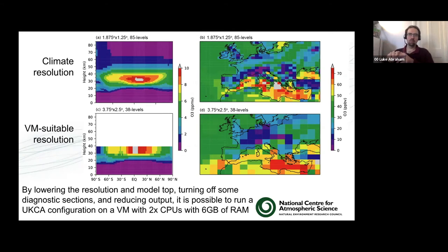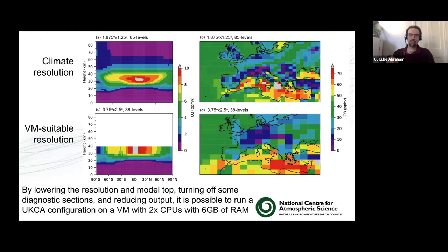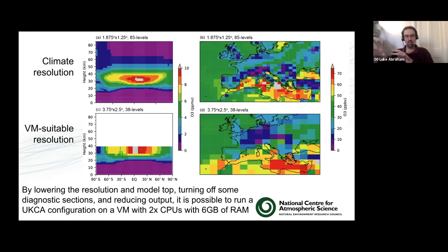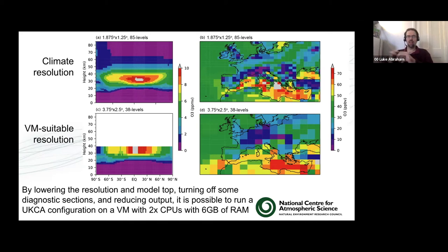For the configuration, we took the climate resolution of N96 with a high model top — a full stratosphere — at one by two degree horizontal resolution. It's been cut back to N48 L38, cutting off at 40 kilometres. It's not ideal from a chemistry perspective, but perfectly fine for testing and training where everything's still working and you're not really interested in what the results look like. By lowering the resolution, cutting the model top, turning off some diagnostic sections and output, we can run this configuration on the VM with just two cores and six gigs of RAM.